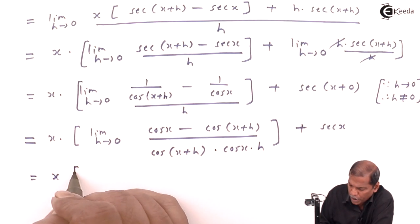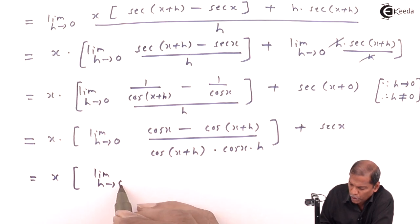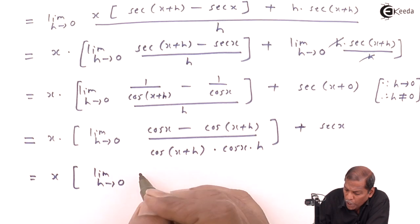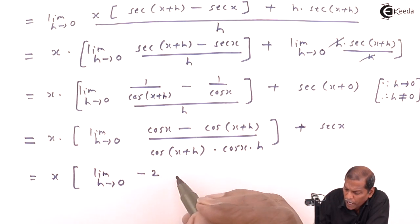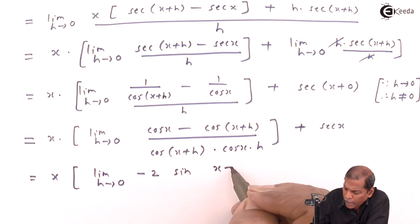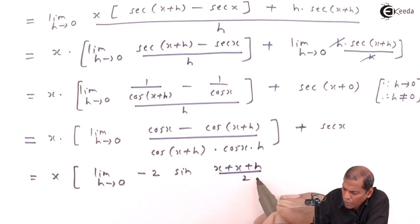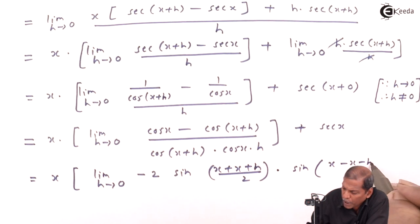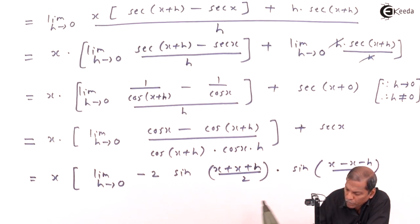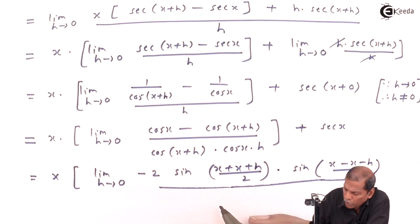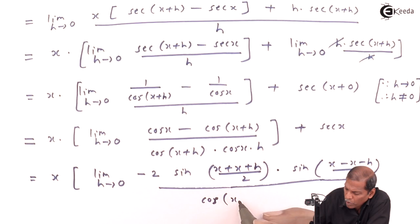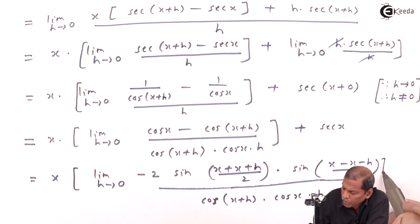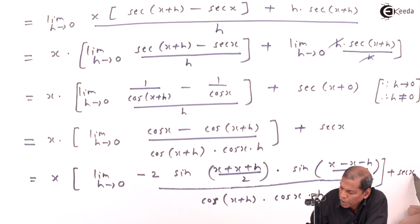So that equals x times the limit as h tends to 0. In the numerator we apply the formula cos C minus cos D, which gives minus 2·sin[(x + x+h)/2]·sin[(x - (x+h))/2], all divided by cos(x+h)·cos(x)·h, plus sec(x).